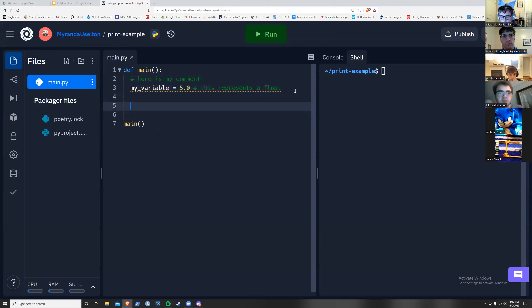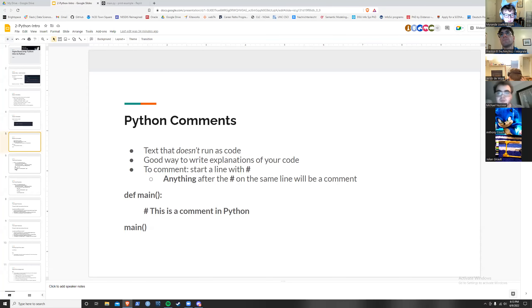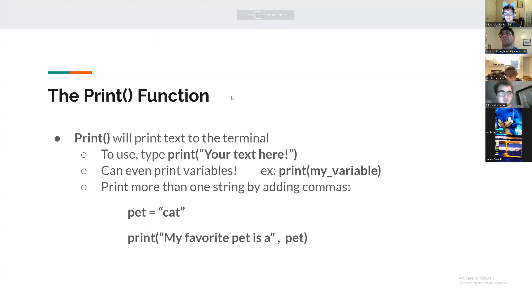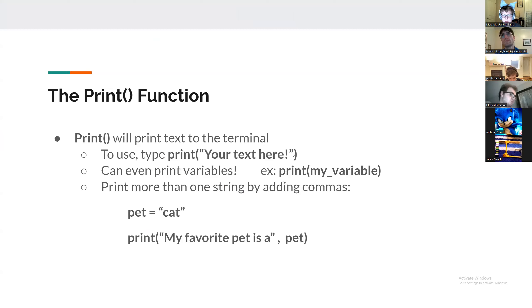Now let's talk about the print function, which you also saw Monday. Print is for printing text to the terminal or console. To use it, type 'print()' with what you want to display inside the parentheses in quotes — for example, 'print("your text here")'. The quotes tell Python you're printing a string, not a variable. If you want to print a number, you'd still put it in quotes.